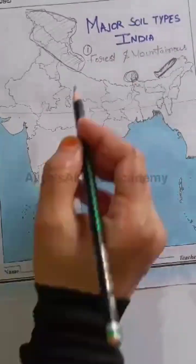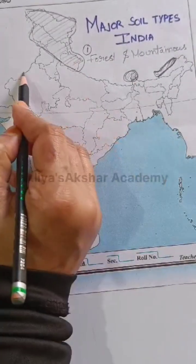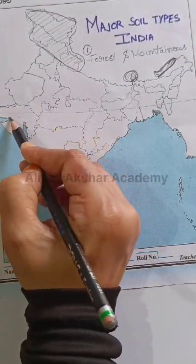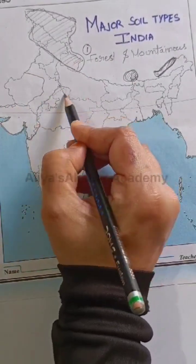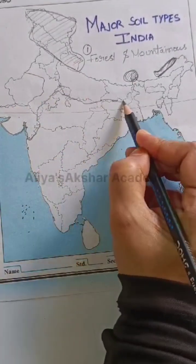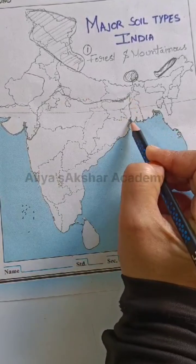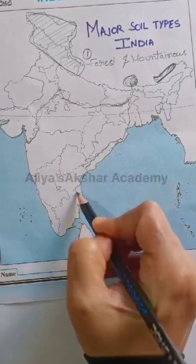In the northern region, which is the mountainous region, Sikkim and parts of Arunachal Pradesh have forest and mountainous soil.